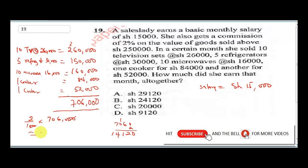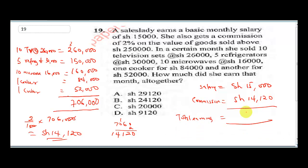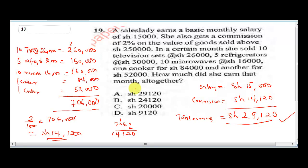She got a commission of 14,120 shillings for her sales. Her total earnings are her salary plus commission. So 15,000 plus 14,120: 0 plus 0 is 0, 2 plus 1 is... carrying through gives us 29,120 shillings. The correct answer is A, so I'll circle A.